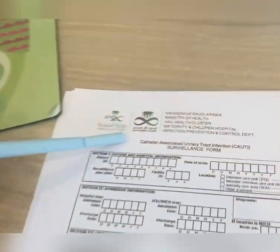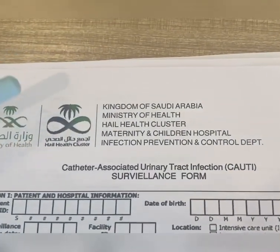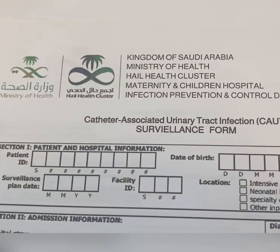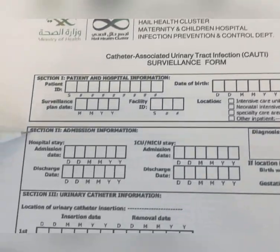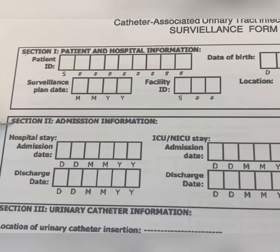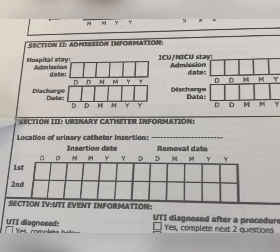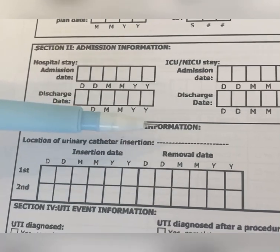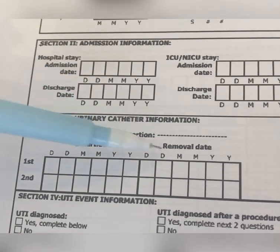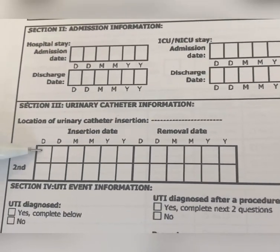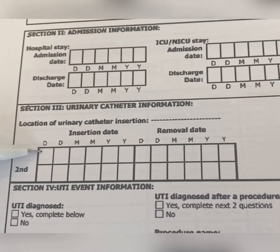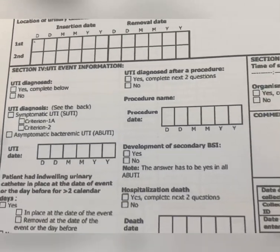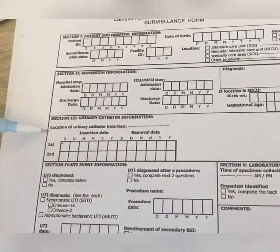We also have the Catheter Associated Urinary Tract Infection Surveillance Form. Fill in the demographic data — section one. Section two: admission information. Section three: urinary catheter information — location of urinary catheter insertion, for example MAT1, then insertion date. Section four will be filled in by the doctor. So nurses fill in only sections one, two, and three.